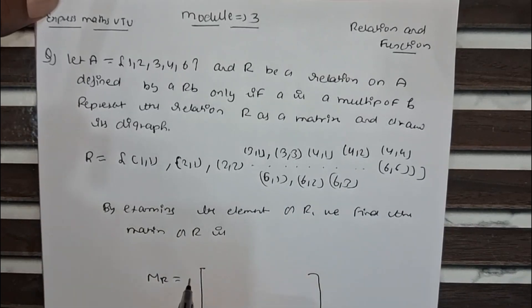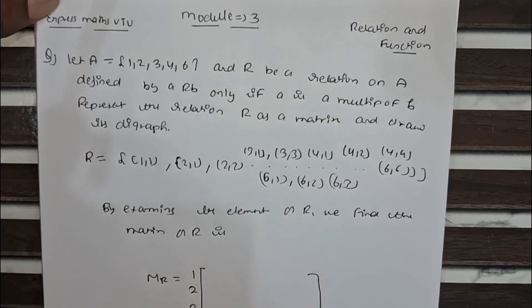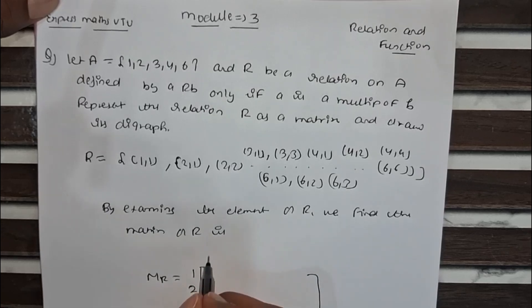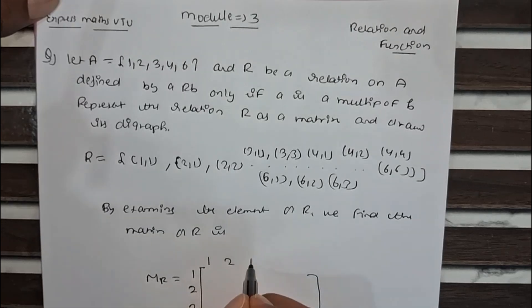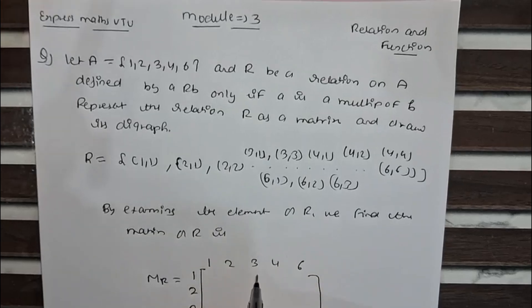First we write the elements as row and column headers: 1, 2, 3, 4, 6 along the top and also down the side.